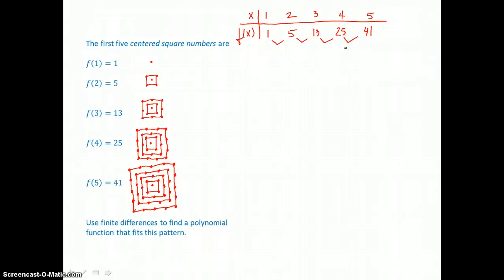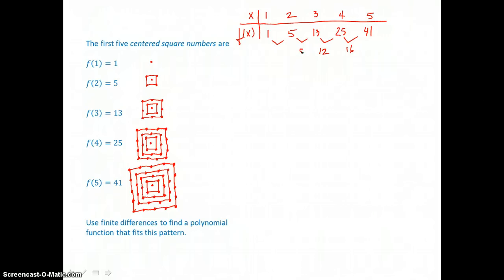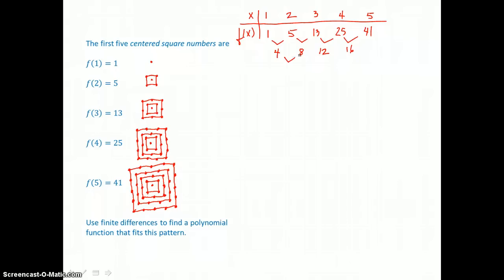Subtracting the first-order differences: 41 take away 25 is 16; 25 take away 13 is 12; 13 take away 5 is 8; and 5 take away 1 is 4. So the first-order differences are not non-zero and constant. Now we look at second-order differences: 16 take away 12 is 4; 12 take away 8 is 4; and 8 take away 4 is also 4. So we have a quadratic model indicated because second-order differences were non-zero and constant.